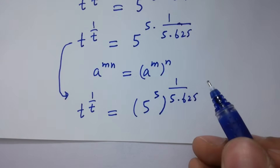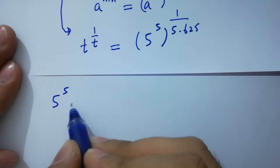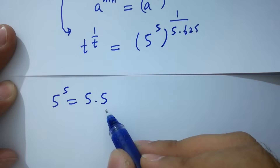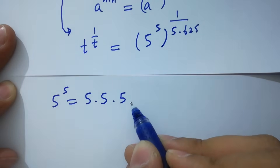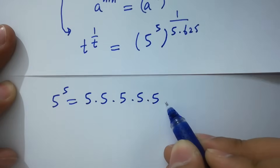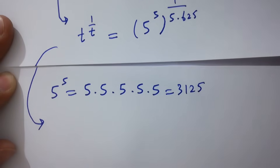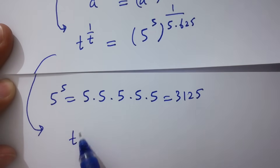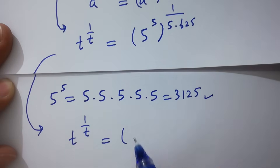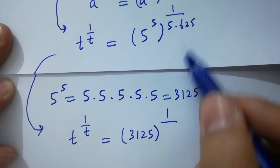In the next step, 5 to the power 5 equals 5 times 5, which is 25. 25 times 5 is 125. 125 times 5 is 625. And 625 times 5 is 3125. So it can be written as t to the power 1 over t equals 5 to the power 5, which is 3125, to the whole power 1 over 5 times 625, giving 3125 to the power 1 over 3125.